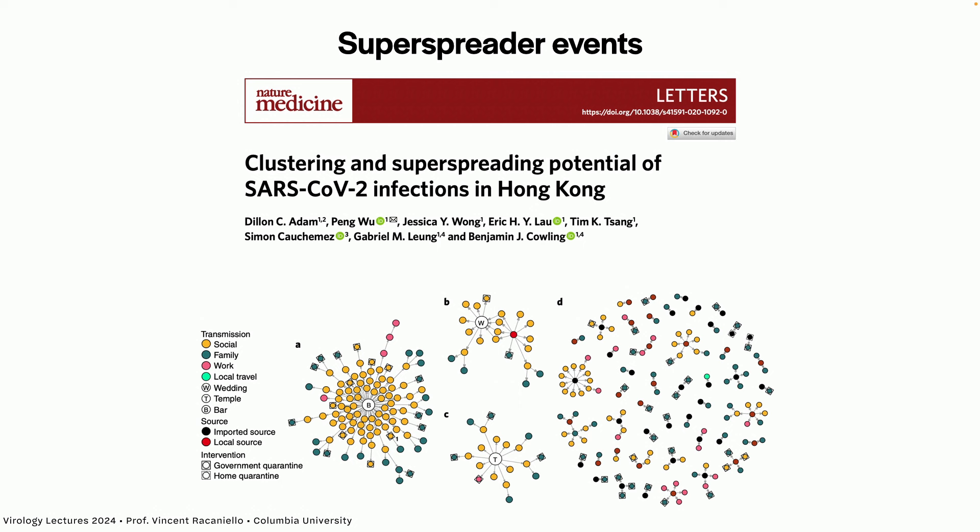There are what we call super spreader events where in some situation you get much more transmission than in the greater community. In Hong Kong early in the SARS-CoV-2 pandemic, one person at a bar spread the virus to many others, who spread it to others — that's a super spreader. That person probably infected 20 or 30 persons. Maybe they shed slightly more virus, but they were in a crowded environment. The environment is really what drives super spreading — examples include families, workplaces, weddings, and temples.